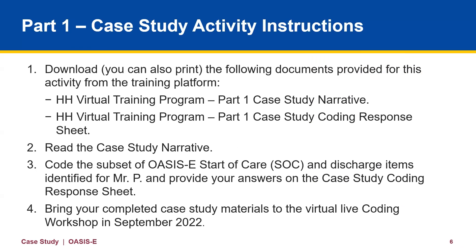Now let's review the instructions for completing Part 1 of the case study activity. The first step is to download, and you can also print, the documents provided for this activity from the training platform. These documents are the home health case study narrative and the home health case study coding response sheet. Read the case study narrative, then code the subset of OASIS-E start of care, or SOC, and discharge items identified for Mr. P, and record your answers on the case study coding response sheet. Bring these two documents to the virtual live coding workshop in September 2022.